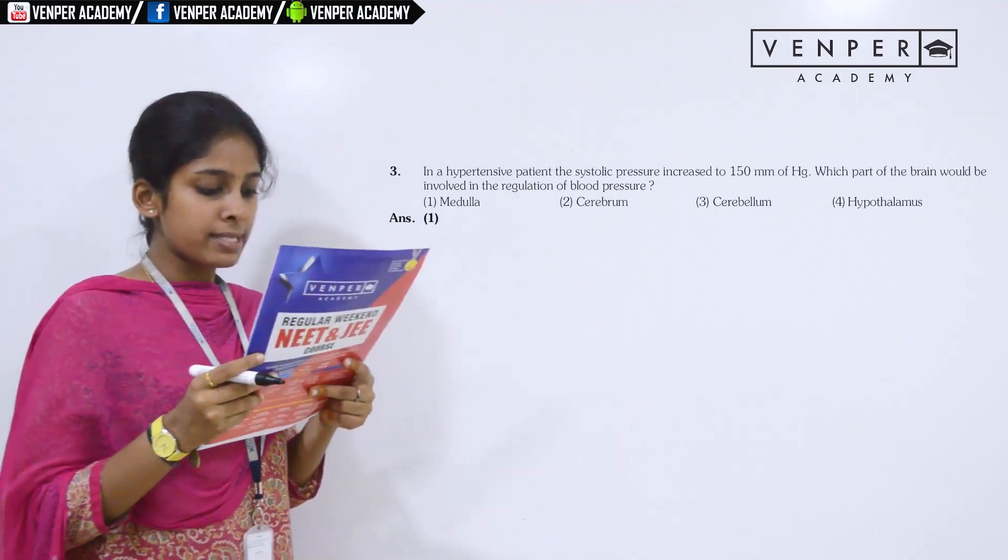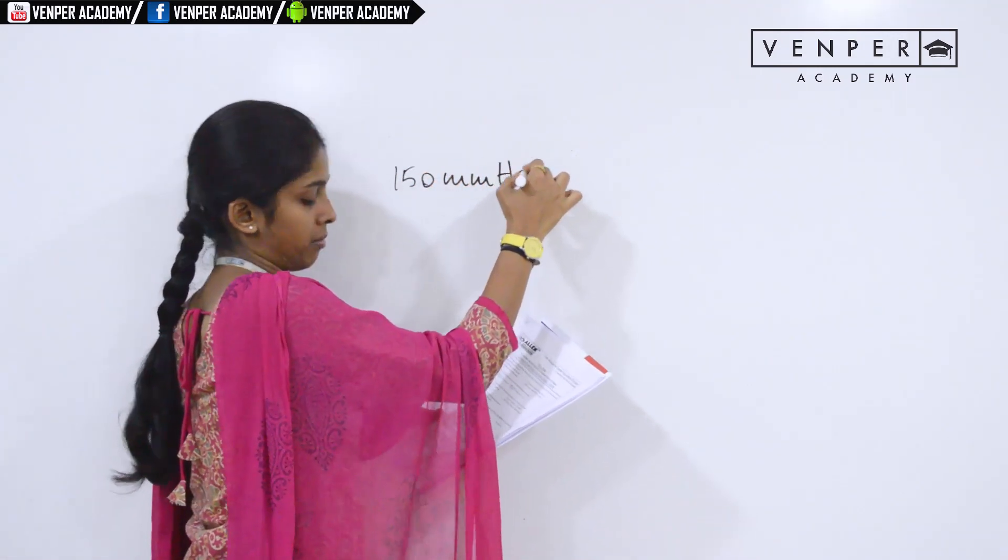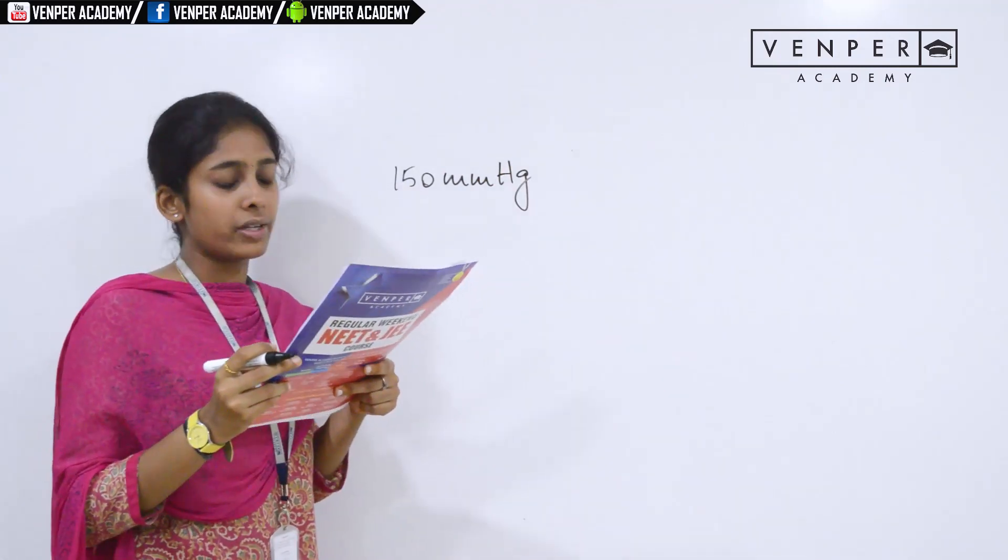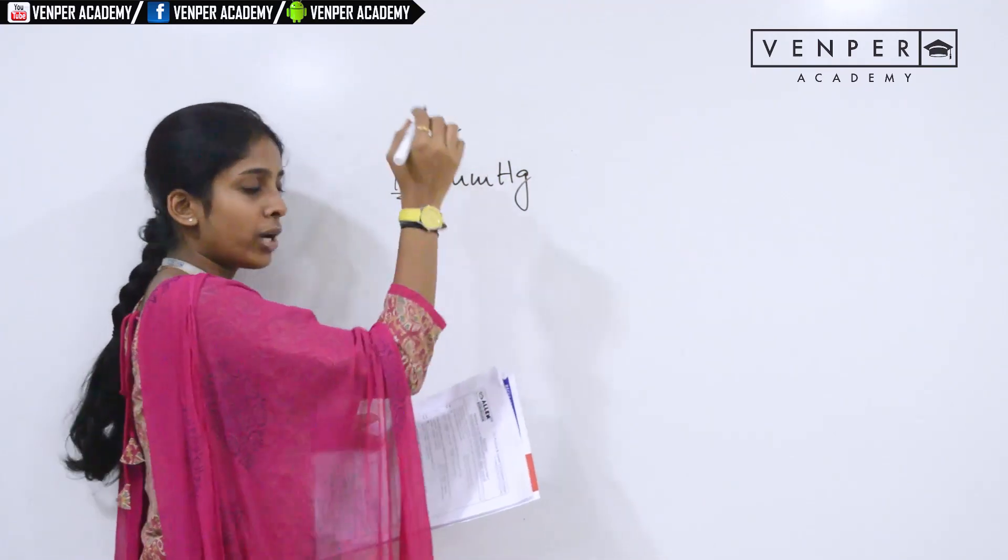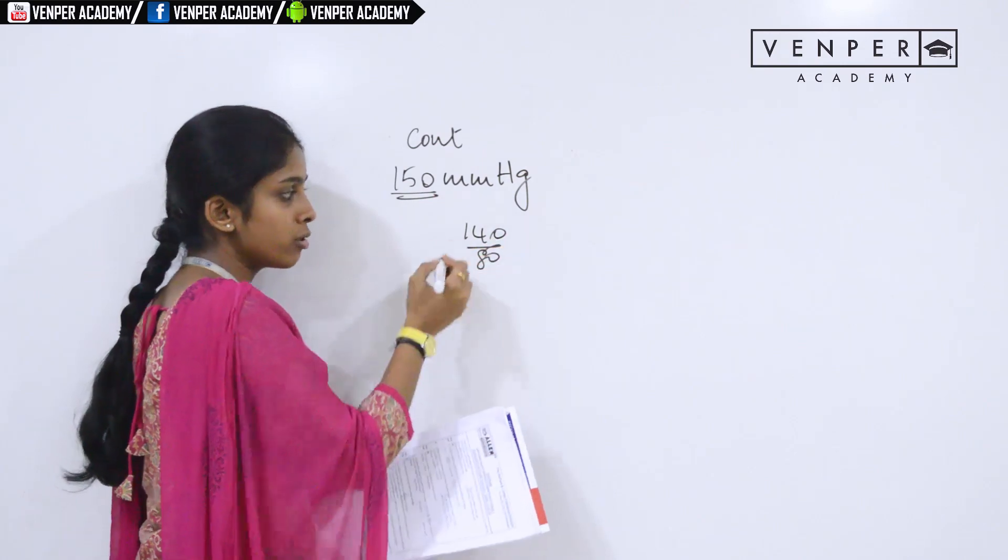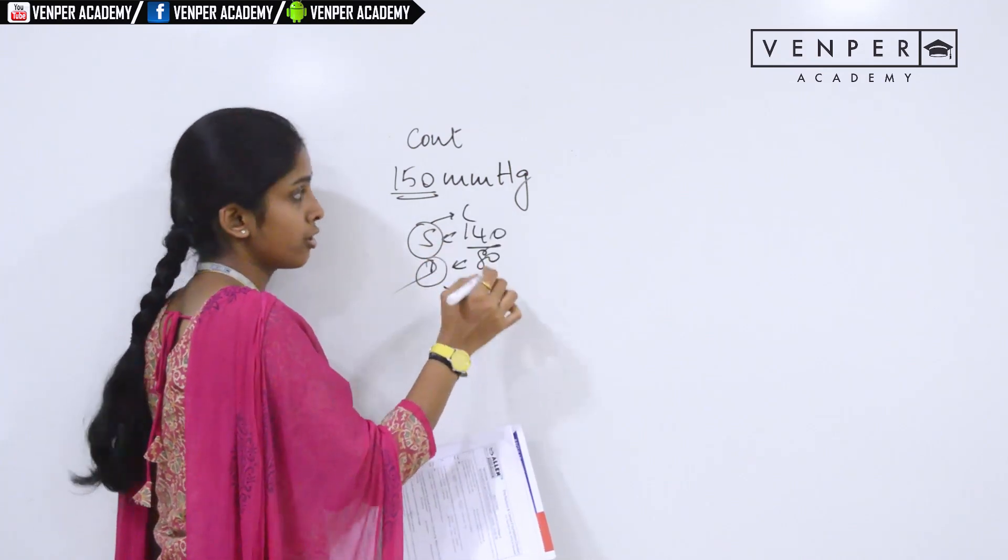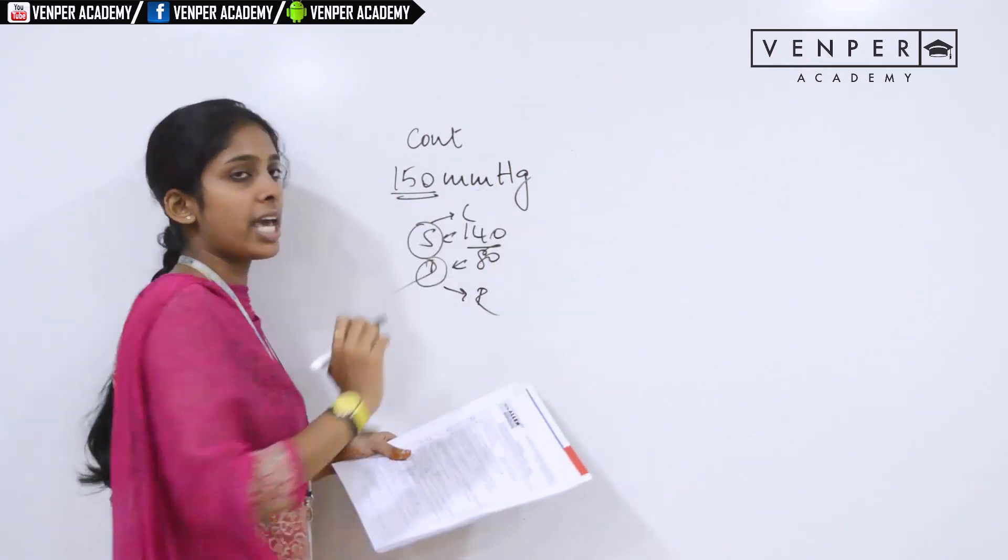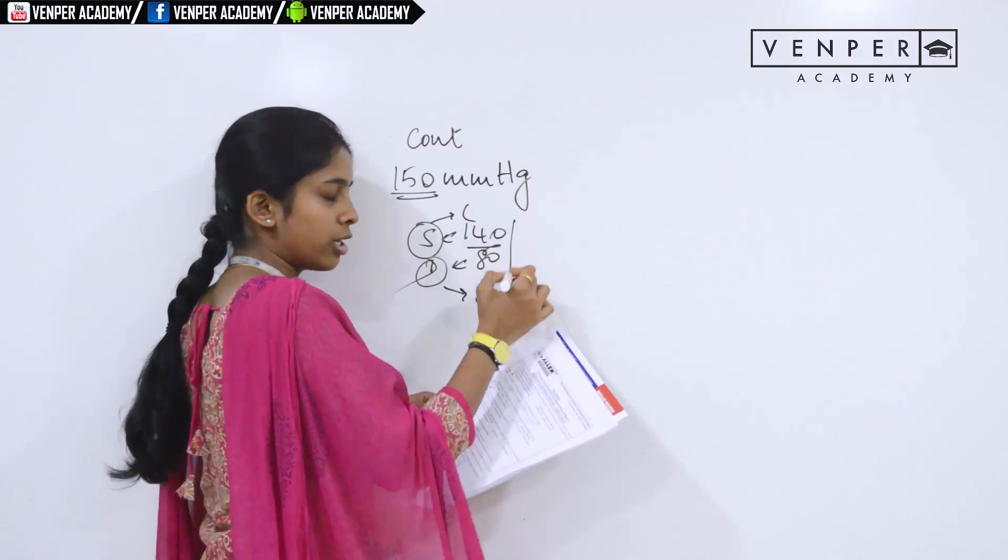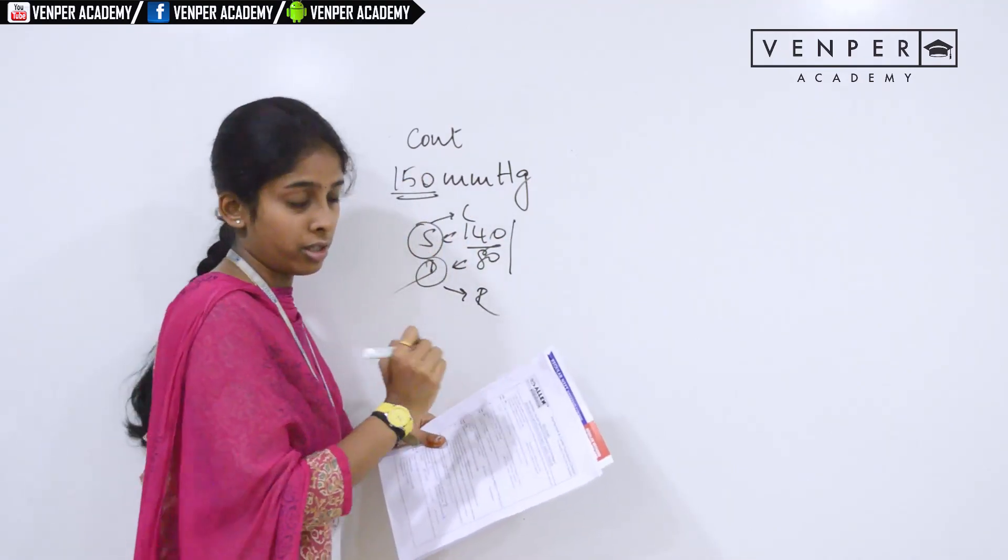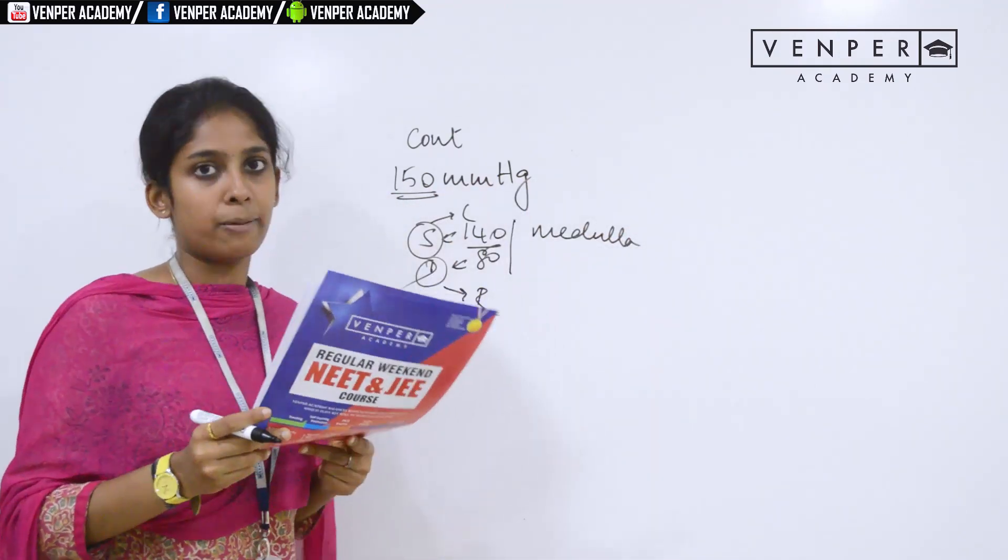Third question: in a hypertensive patient, systolic pressure is increased to 150 mm Hg. Which part of the brain would be involved in the regulation of blood pressure? Systolic pressure refers to contraction. When you write BP, you write 140 by 80. This is systolic pressure and this is diastolic pressure. This refers to contraction and this refers to relaxation. This is the normal BP level and this is hypertension. Blood pressure is controlled by medulla. Your option would be medulla oblongata.